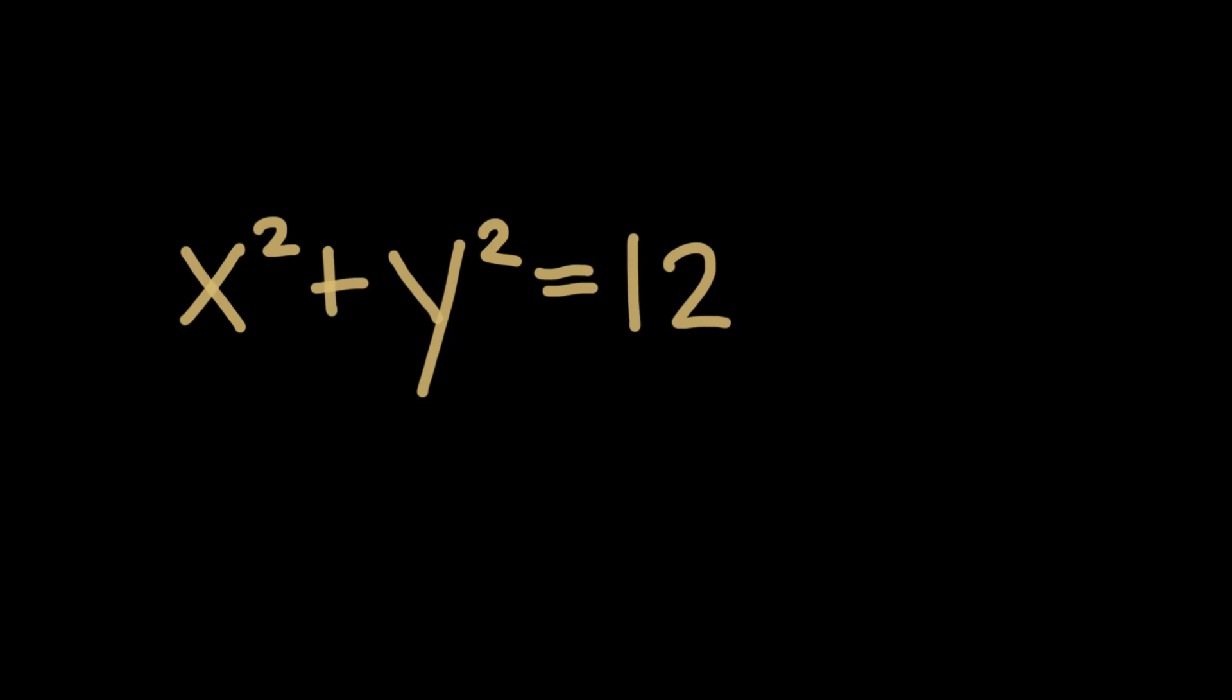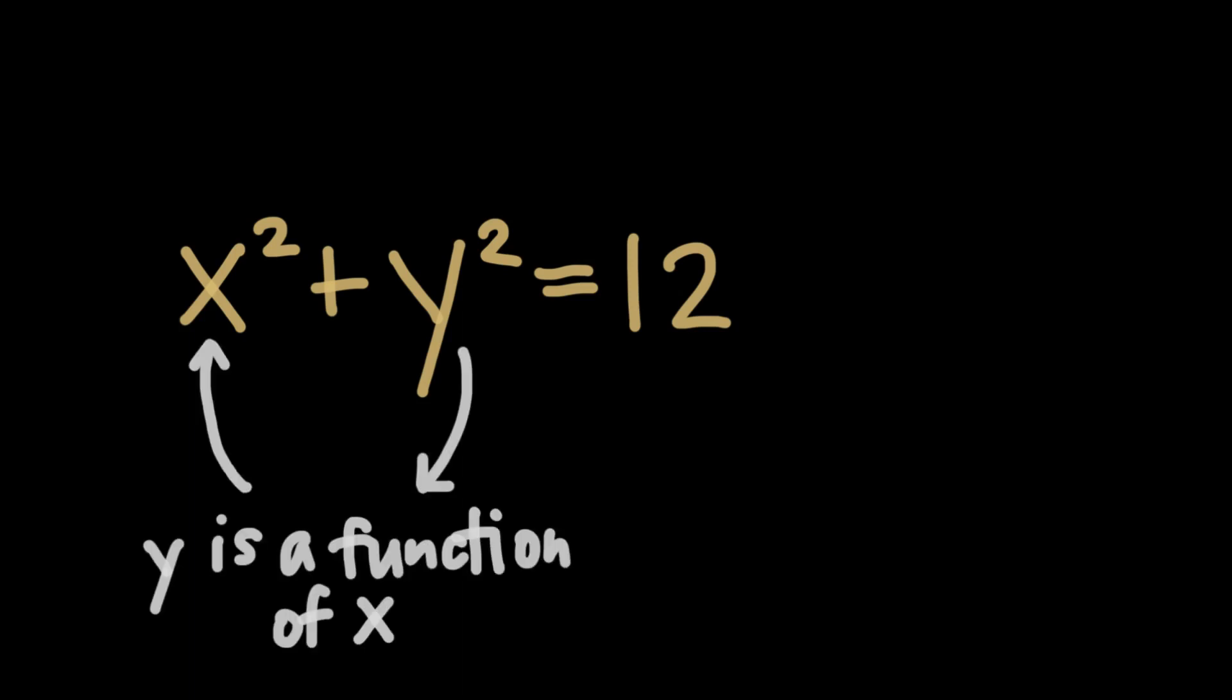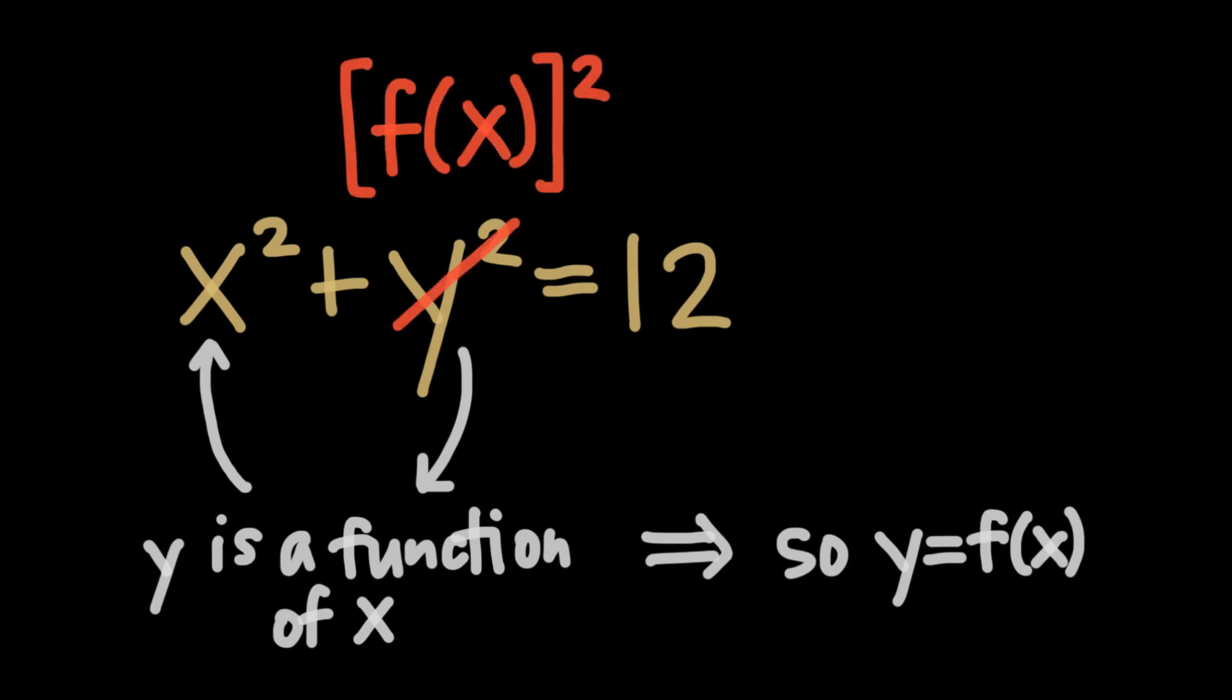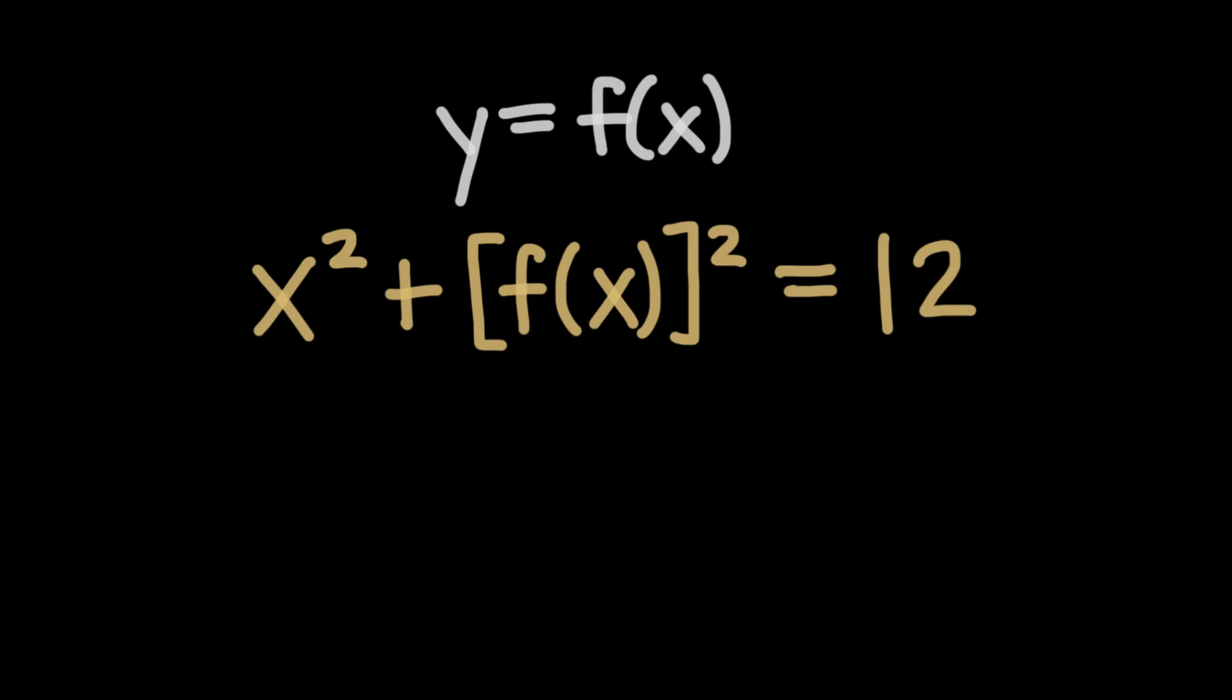It's really important to understand that one of these variables is the function of the other. This is the implication of the implicit function. Usually we use x as the independent variable and y as the dependent variable, so y is actually a function of x. We could even rewrite the function as x squared plus f of x squared in order to represent this.